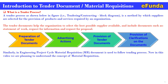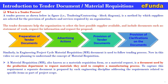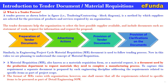Similarly, in an engineering project cycle, a material requisition (MR) document is used to follow the concept of material tendering process. A material requisition, also known as a material requisition form or material request, is a document used by the production department to request materials needed to complete a manufacturing process. To capture this requirement, a separate document is prepared by each engineering discipline addressing the requirements related to the specific item as part of the project scope. The format of MR varies with organization; however, one shall ensure that all requirements related to the specific item to be procured are covered as part of the detailed engineering scope of work.